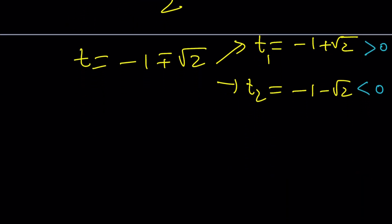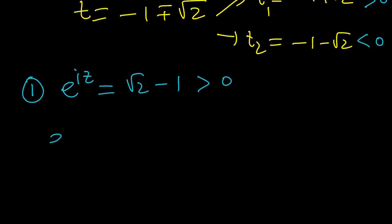Anyway, so start with t sub 1. I'm going to call this case 1. e to the iz is equal to t, which is negative 1 plus root 2. Can I write it as root 2 minus 1? And it just bugs me, I need to write that first. And as I said earlier, this is positive. So now we can do this.